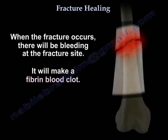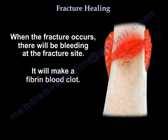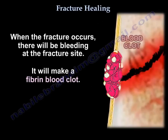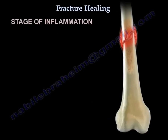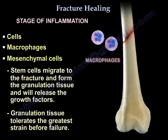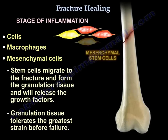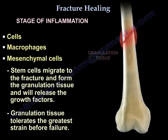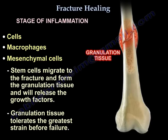When the fracture occurs, there will be bleeding at the fracture site, which will make a fibrin clot. Then the stage of inflammation comes. Cells — macrophages, mesenchymal cells, stem cells — migrate to the fracture and form granulation tissue and release growth factors. Granulation tissue tolerates the greatest strain before failure.